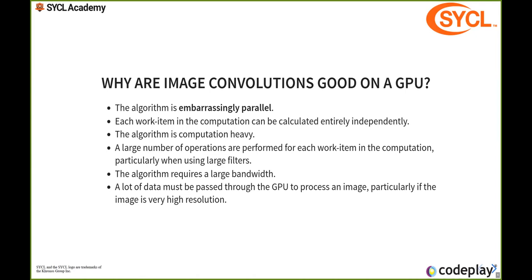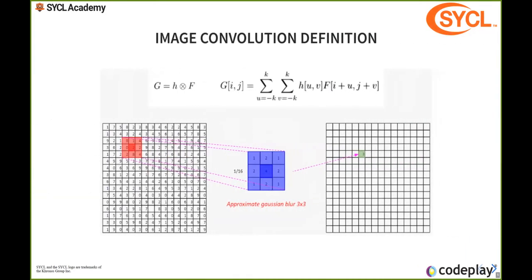It also requires large bandwidth. We need a lot of memory in order to compute these, and GPUs are built to maximize bandwidth from device global memory to your compute units. It also requires a lot of data. Very simply, we have our filter, and we're going to be applying each element to an element in the stencil that we take out of the original image.